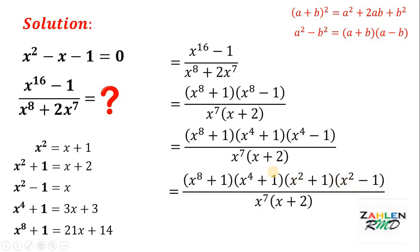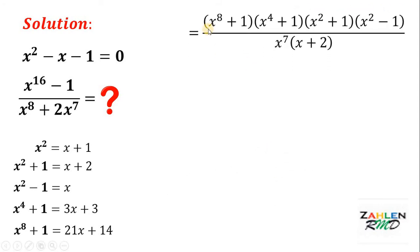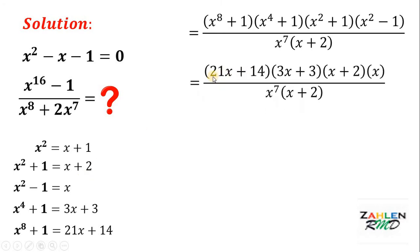So the full numerator becomes x raised to 8 plus 1, times x raised to the fourth plus 1, times x squared plus 1, times x squared minus 1. We recognize these expressions: x squared plus 1 equals x plus 2, x squared minus 1 equals x, x to the fourth plus 1 equals 3x plus 3, and x raised to 8 plus 1 equals 21x plus 14. Substituting, the numerator is 21x plus 14, times 3x plus 3, times x plus 2, times x. All over x raised to 7 multiplied by x plus 2.